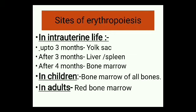The stage when erythropoiesis occurs in the liver and spleen is called the hepatic stage. When it starts in the bone marrow, that phase is called the myeloid phase. In children, erythropoiesis occurs in the bone marrow of all bones, but in adults it occurs only in the red bone marrow — for example, in the ribs, sternum, cranial bones, and pelvic bones.